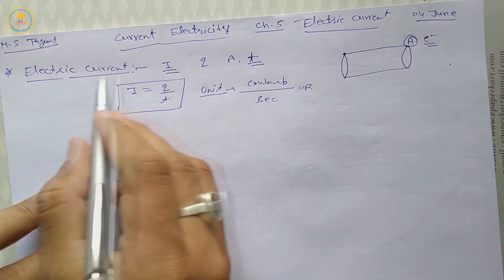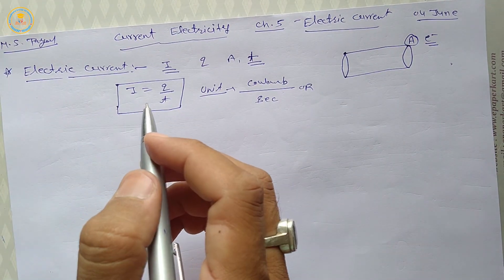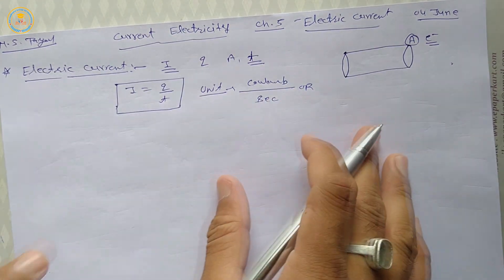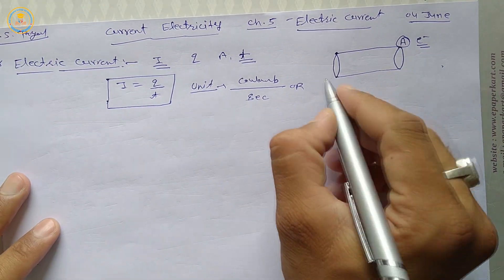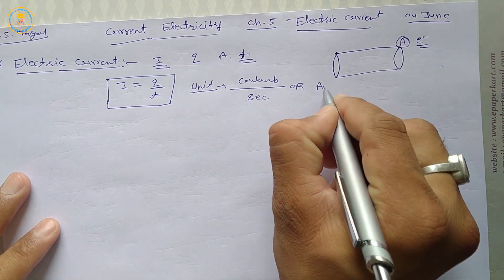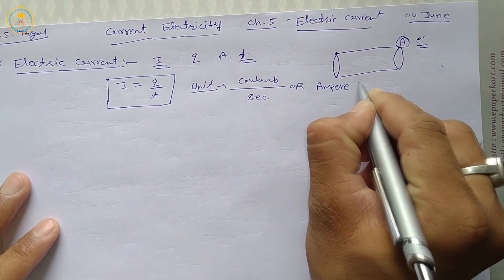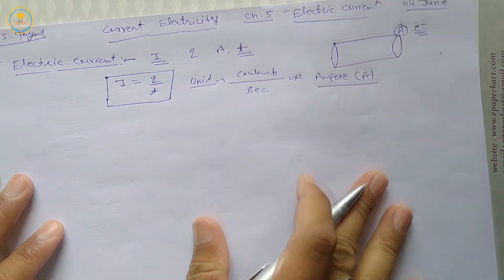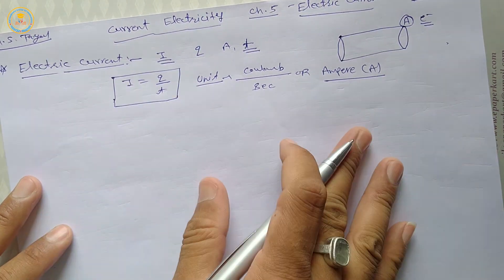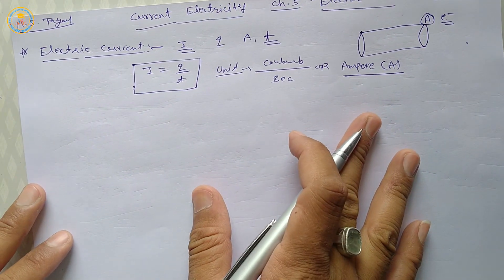But electric current is a fundamental quantity, so its unit is ampere, represented by capital A. The unit of electric current is ampere.